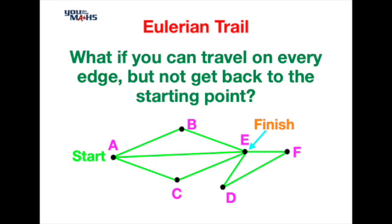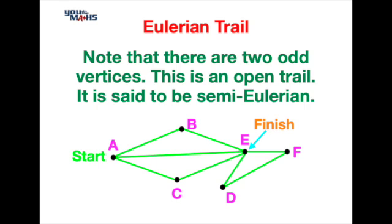In this case we were not able to get back to our starting vertex and you'll also notice that in this particular network there are two vertices that are odd. Vertex A has three edges and vertex E has five edges. A graph like this is said to be semi Eulerian, so we can travel across every particular edge just once but we're not able to get back to the starting point. So it's an open trail and what defines it is that if we have two odd vertices we know that it's going to be semi Eulerian.